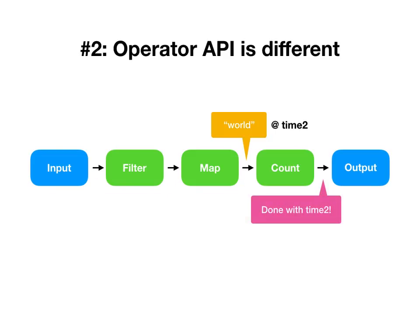The filter operator will process its data and make the same statement, map will make the same statement, and count can finally take its action, produce some data, and then say it's done with time two also. This is very sensible — it's exactly the information we need to provide to count, so it makes a lot of sense that operators would make this type of announcement.